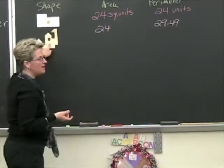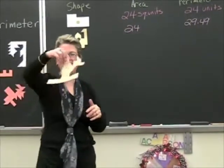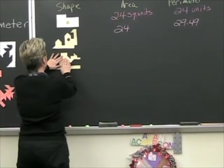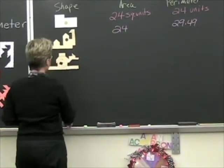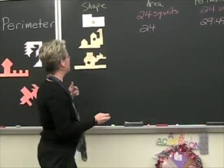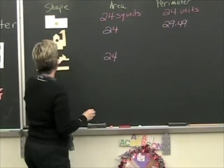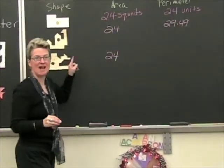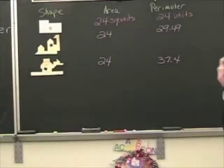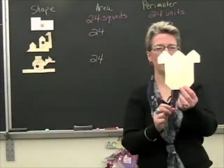So the perimeter on this one is bigger. Here's another one — looks like an alien space station, a robot slash dragon — it's a llama, or a dinosaur. Here again the area is 24, but the perimeter on this one is 37.4.